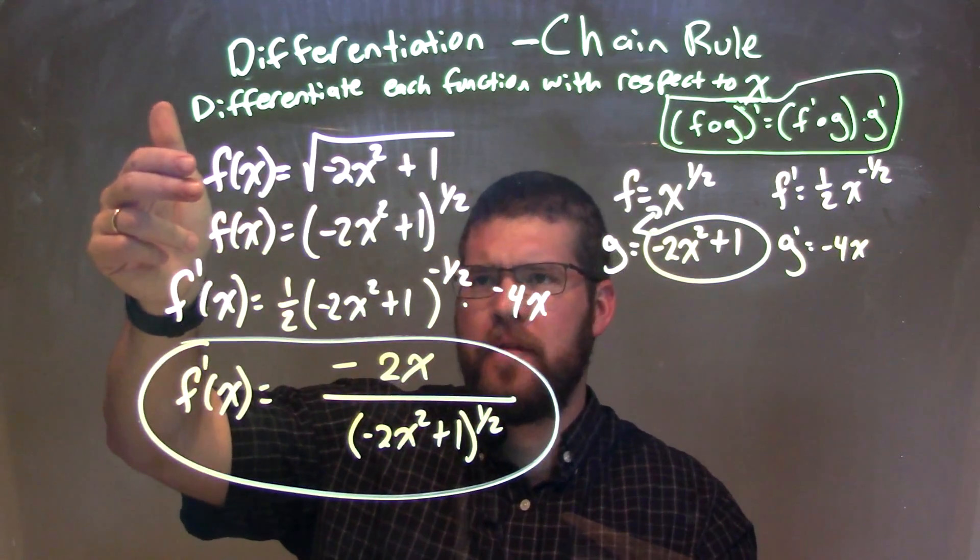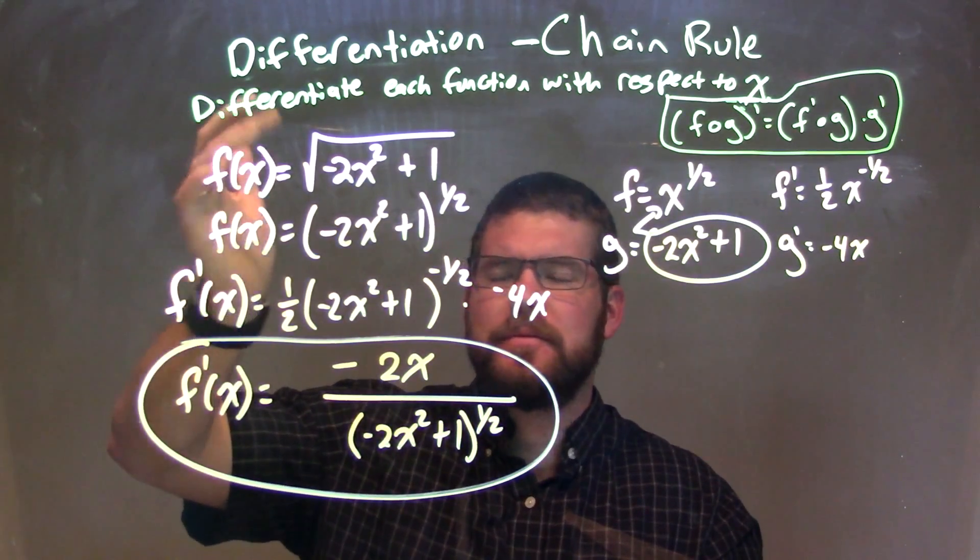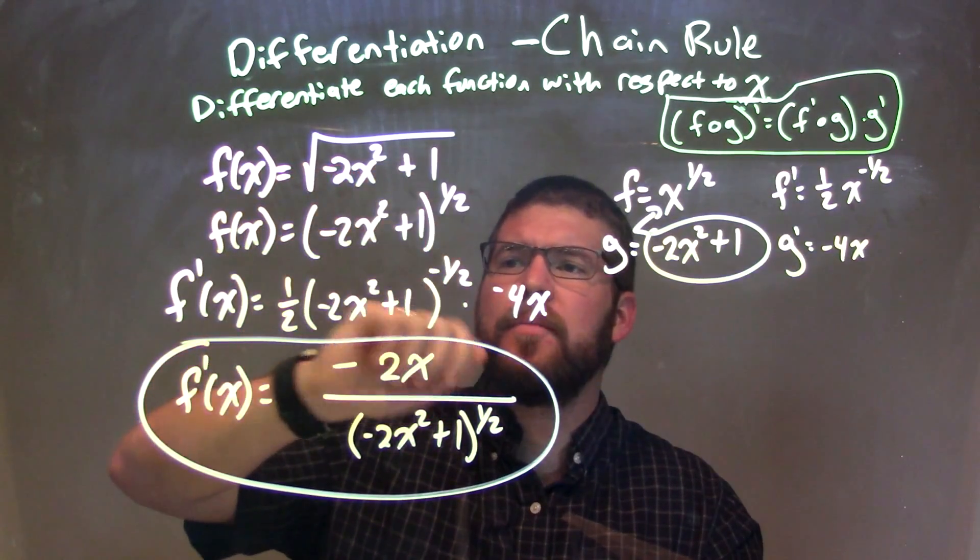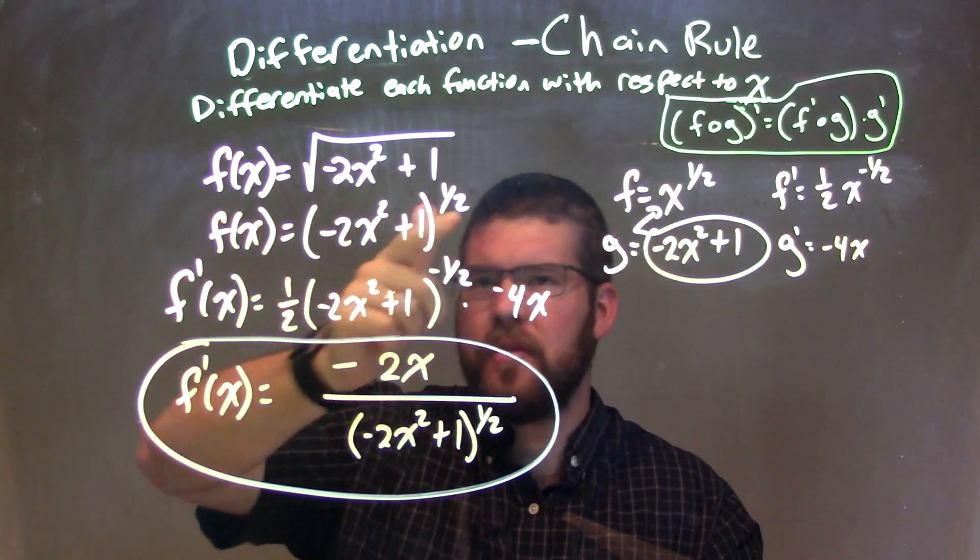So let's recap. We're given our f of x being the square root of negative 2x squared plus 1. I rewrote that to be to the 1 half power.